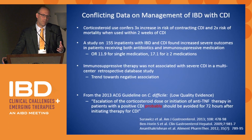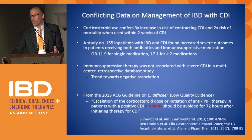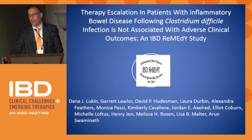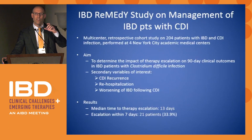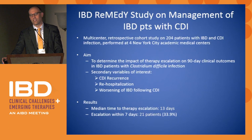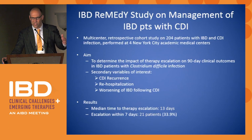The ACG guidelines hedge — they say if you have C. diff and put them on treatment, maybe wait about 72 hours before considering immunosuppressive use, but there's really no good data showing that. So a group of us in New York thought, why don't we get together, see if we could get more data. It was four centers in New York City looking at just over 200 patients with C. diff and IBD. We were trying to look at therapy escalation — is that associated with worsening outcomes? We defined escalation as starting steroids, starting a biologic agent, or increasing the dose of a biologic. The outcomes we looked at at 90 days were death, sepsis, and colectomy.